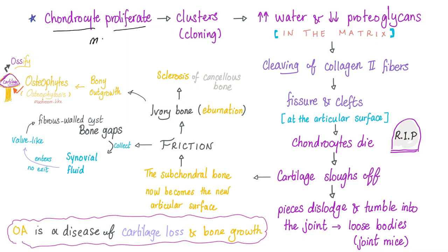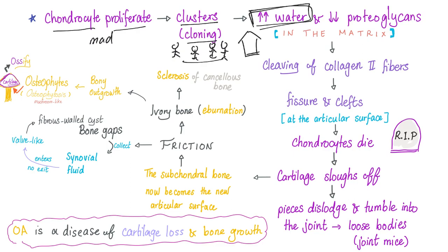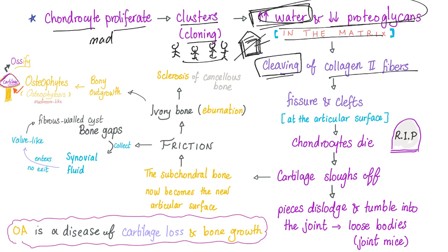The chondrocytes proliferate — gone mad — and start to form clusters, cloning. Water content increases while structural components decrease in the matrix, like a flooded house. This leads to cleaving of collagen into fibers, causing fissures and clefts at the surface of the articular cartilage. The chondrocytes then die — first they go mad, proliferate, then they die.